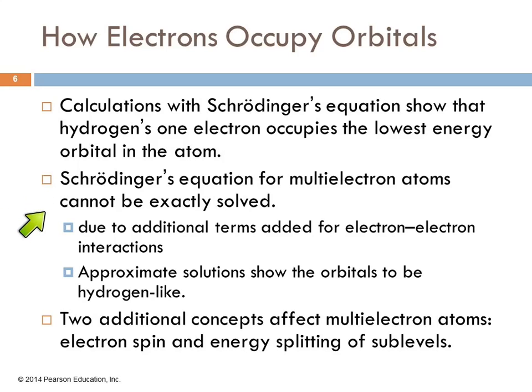And so they have to do approximations because we have to throw in additional terms because of the interactions. And so we get approximate solutions. And the orbitals are hydrogen-like. The S orbital is spherical and the P and the D have those shapes, but we can't calculate them exactly. And then there's two more ideas that affect these multi-electron atoms: one is electron spin, and the other is energy splitting of sublevels.